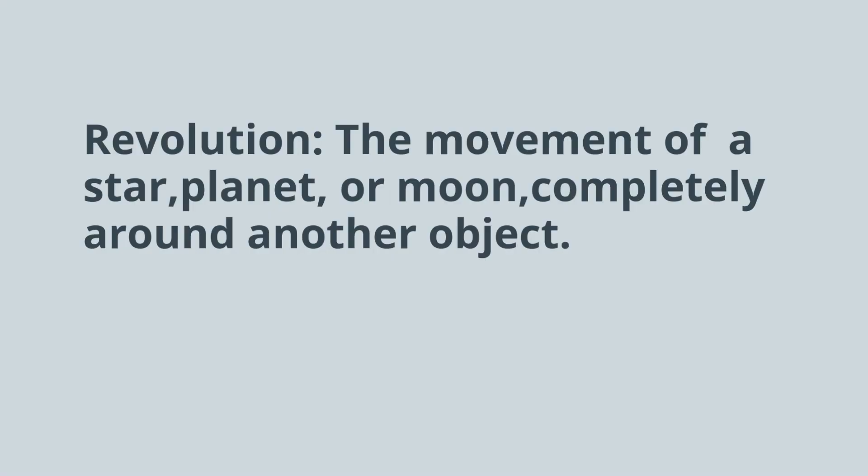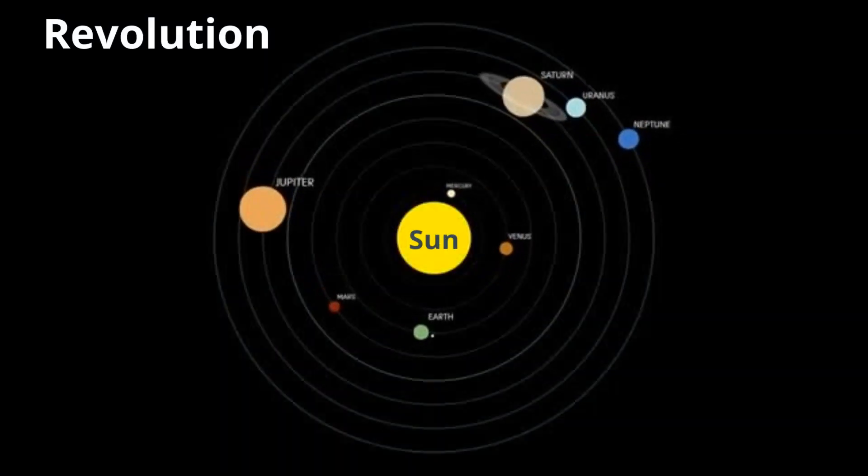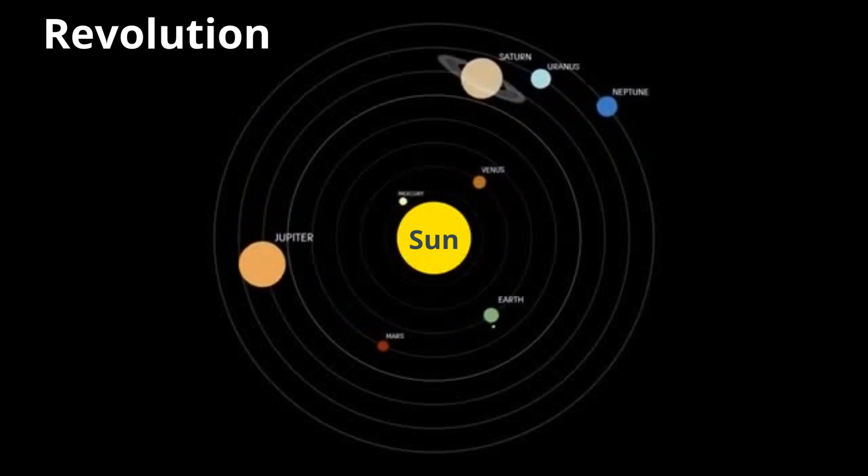Next, we have revolution. A movement of a star, planet, or moon completely around another object. And here are the planets revolving around the sun.